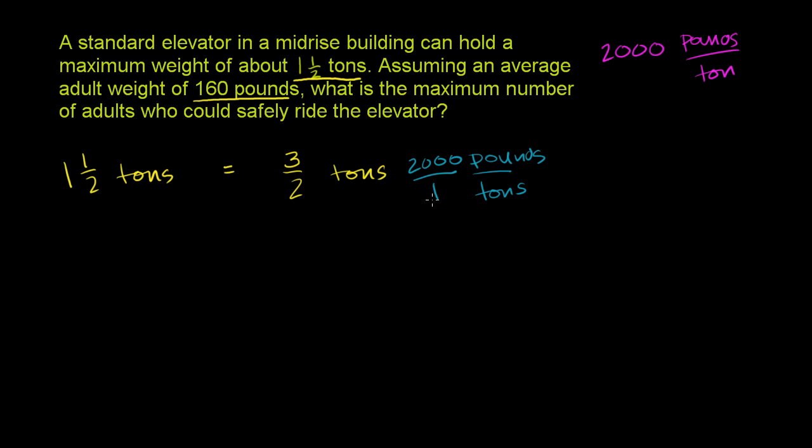How do we convert these 3/2 tons into pounds? We're going to multiply it by something, and we want the tons to cancel out. So we want tons in the denominator and pounds in the numerator. There are 2,000 pounds for every 1 ton, or 2,000 pounds per ton.